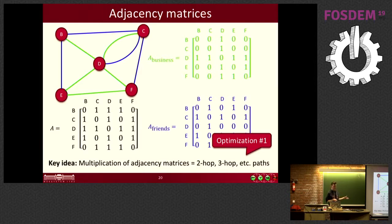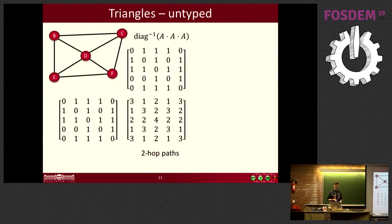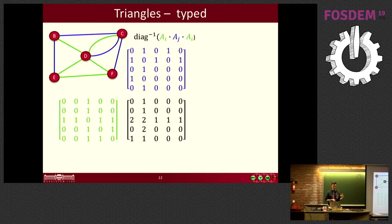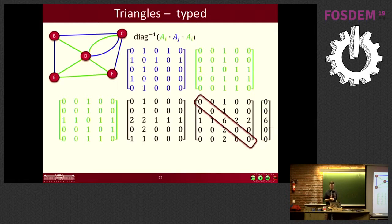For the untyped case, we computed A × A × A, then took the diagonal elements of the third matrix — if three-hop paths close into their beginning node, that's a triangle. It was straightforward to adapt this to the typed case: multiply one type matrix by another and then by the first type again, take the diagonal elements, and get the triangle count per node. The wedge count part is simpler, so this handled the more difficult part.